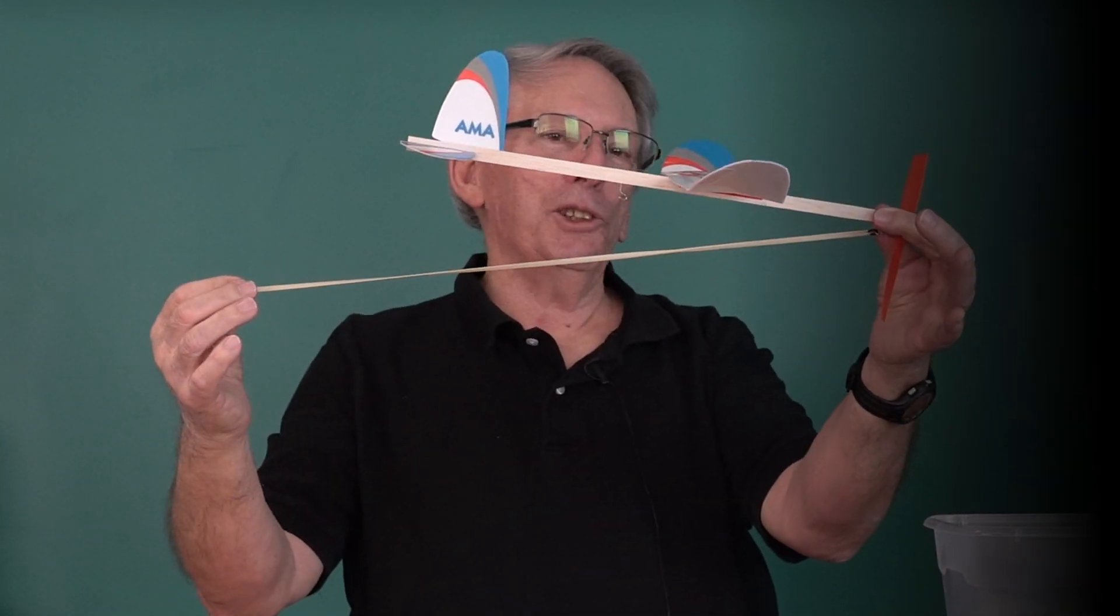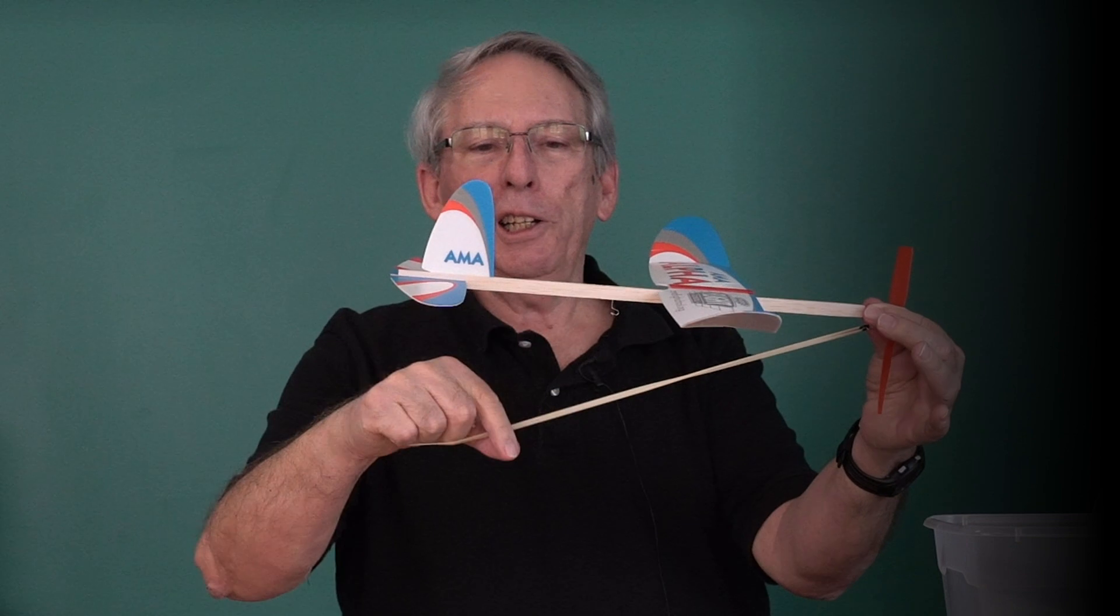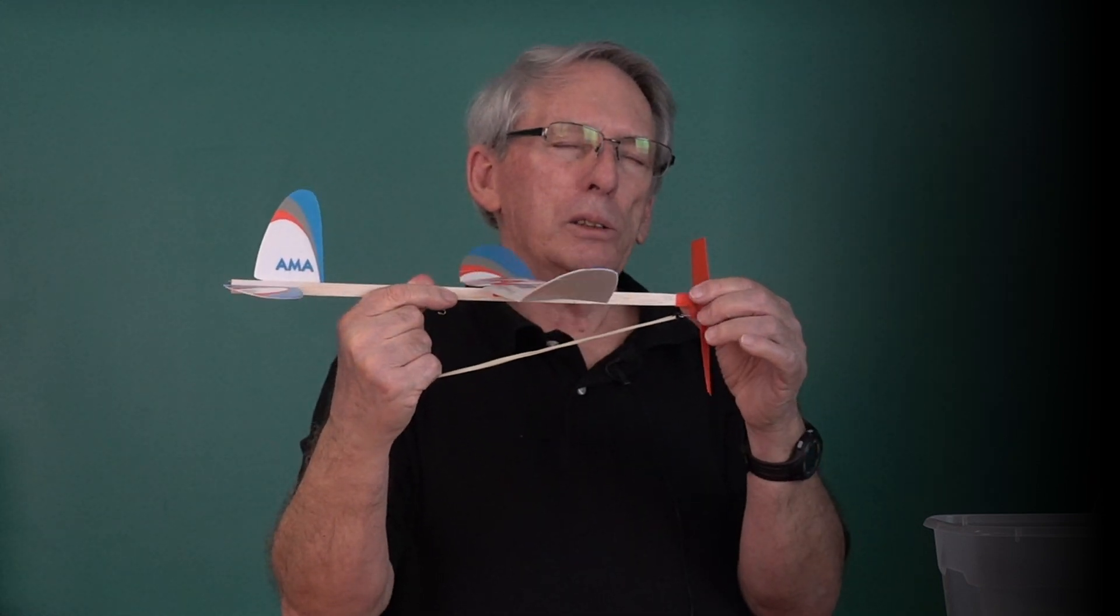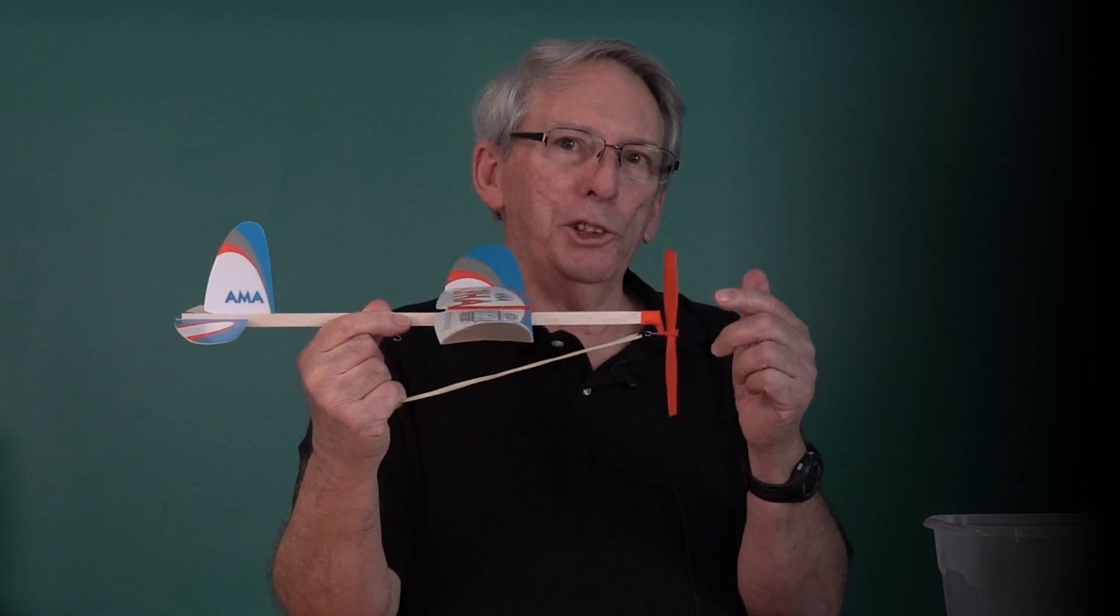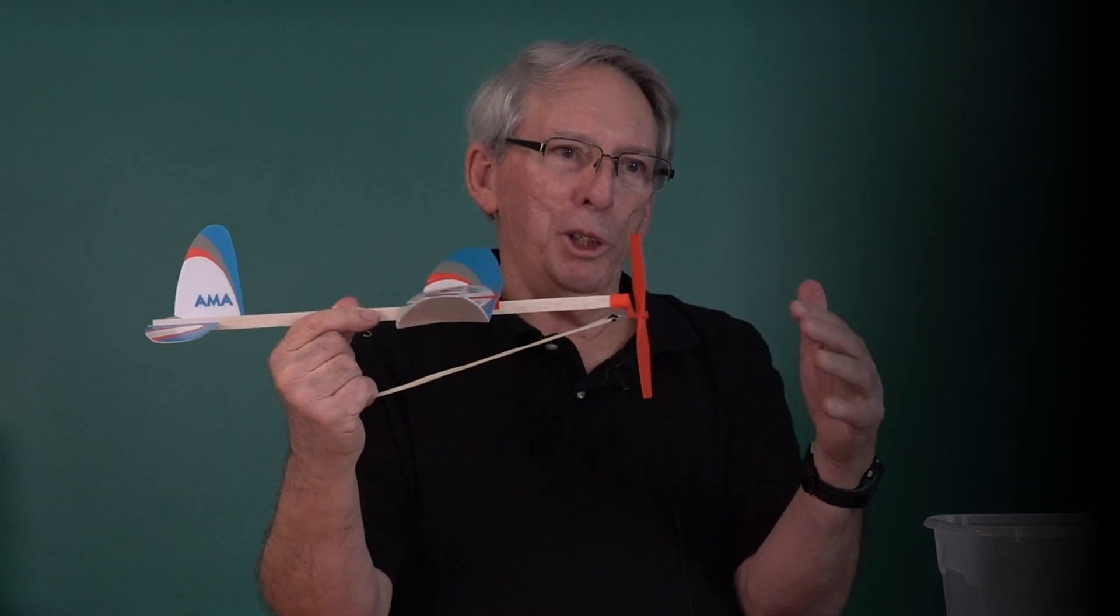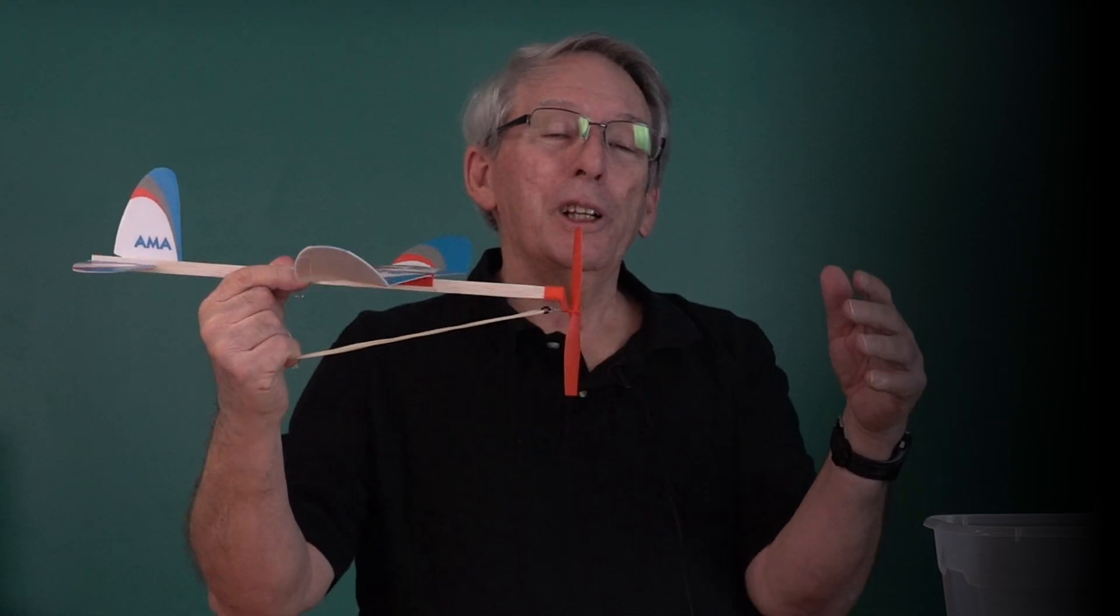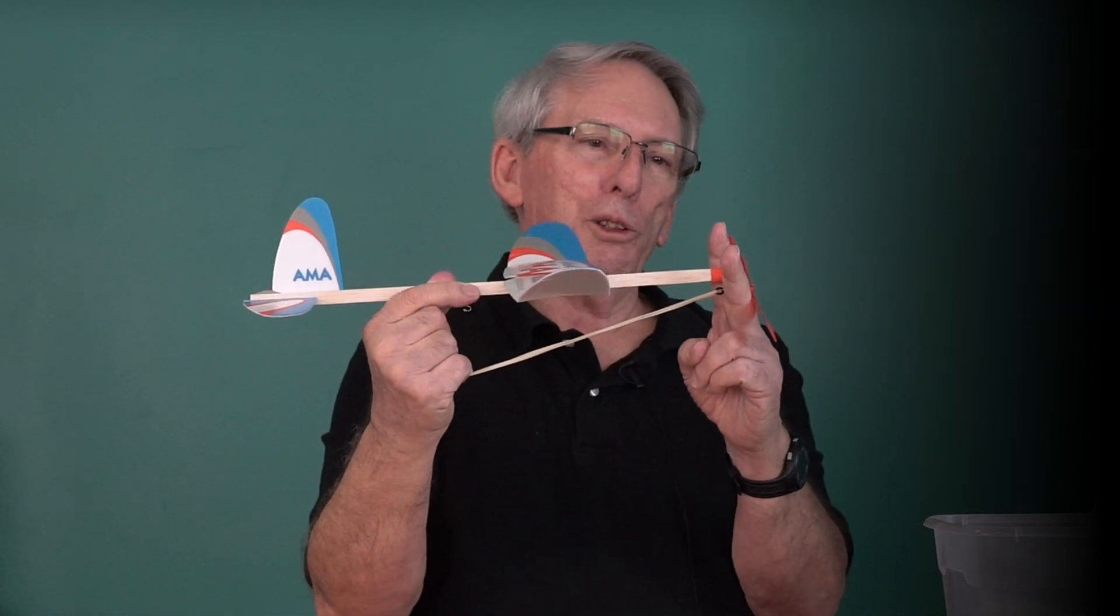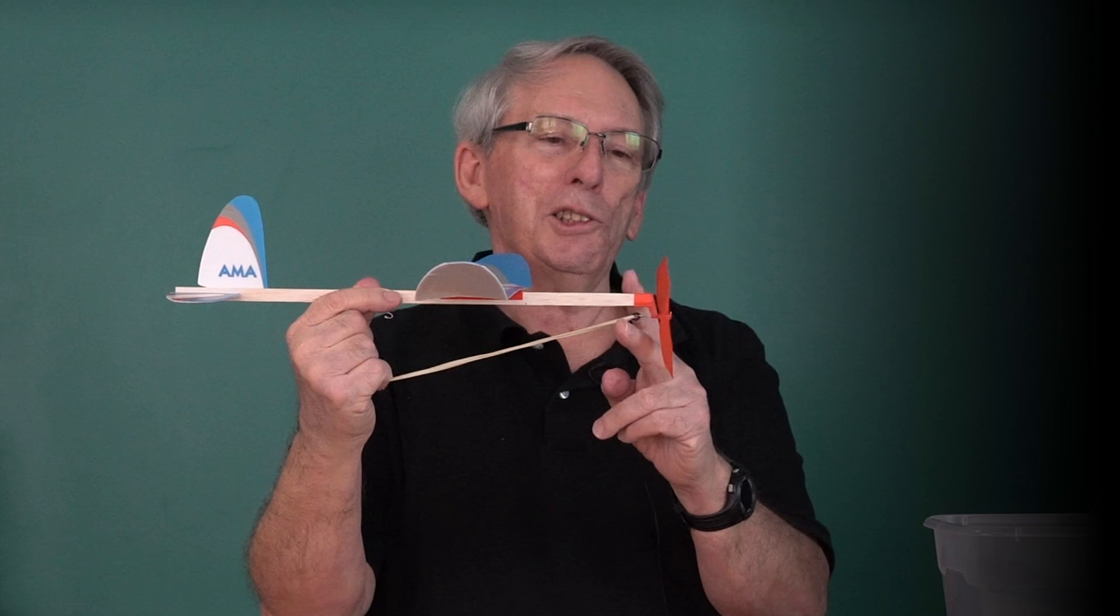But once you get it attached to the airplane, you need an assistant to hold the airplane and the propeller while you wind it up. There are instructions that come with the Alpha Kit that show you a diagram of a little wooden stooge that you can actually wind the motor by yourself using two vertical columns. I think they use nails that you can hook the propeller in and pull against it to wind the motor.